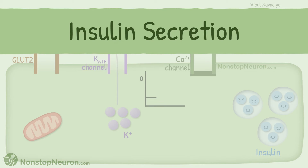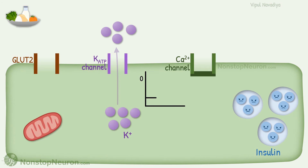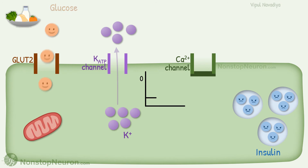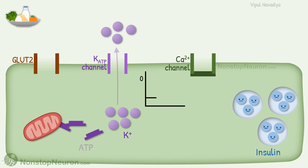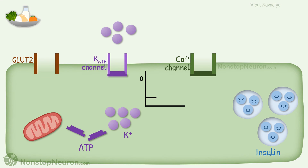Time to wake the cell up for insulin secretion. Let's say a person has taken an energy-rich meal. This increases glucose level in the blood. This glucose enters the beta cells through glucose transporter 2 (GLUT2). Metabolism of the glucose in the cell produces ATP. Increased ATP level leads to closing of ATP-sensitive potassium channels. So, potassium efflux decreases and it starts getting accumulated in the cell.